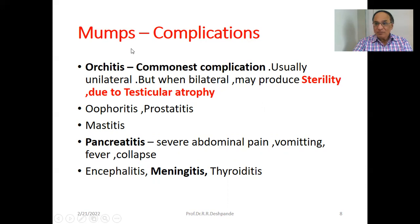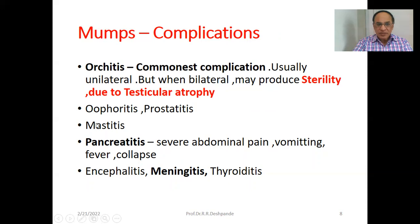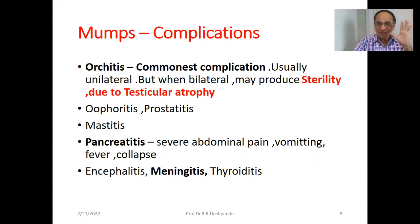Further complications of mumps include: oophoritis, prostatitis, mastitis (breast inflammation), pancreatitis — which causes severe abdominal pain, vomiting, fever and collapse requiring hospital admission. Pancreatitis is a very serious disease; serum amylase is increased. Other complications include encephalitis, meningitis, and thyroiditis.